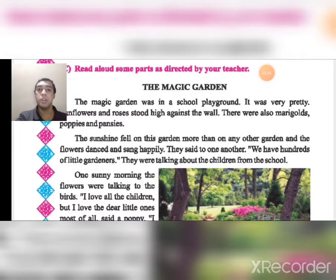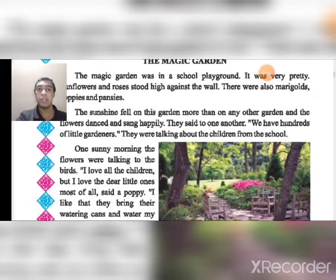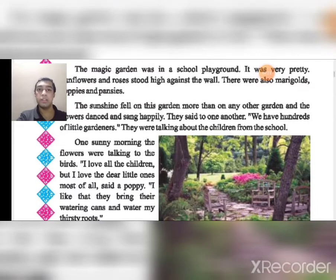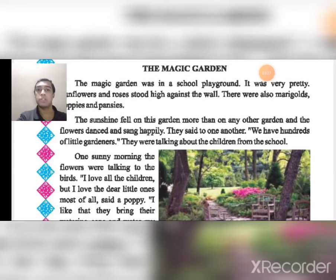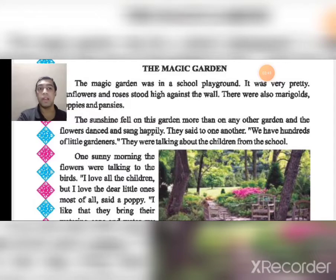There were also marigolds, poppies, and pansies — so there are five flowers in total: sunflower, roses, marigolds, poppies, and pansies. The sunshine fell on this garden more than on any other garden, and the flowers danced and sang happily. They said to one another, 'We have hundreds of little gardeners.' They were talking about the children from the school — they are talking about you.